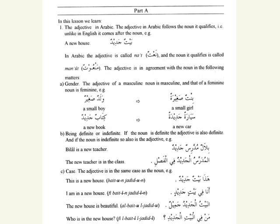The adjective must also agree in case. The adjective is in the same case as the noun. For example, if we want to say 'this is a new house,' Hadha Beitun Jadidun — Beitun is in the nominative case, and the adjective Jadidun is also in the nominative case, taking dhamma. If we want to say 'I am in a new house,' Anna fi Beitin Jadidin — because of fi, which is a preposition, beit goes into the genitive case and takes kesra, and the adjective Jadid also takes kesra.